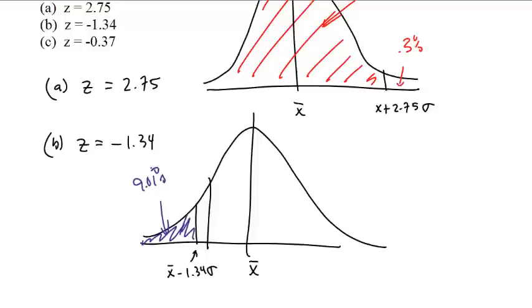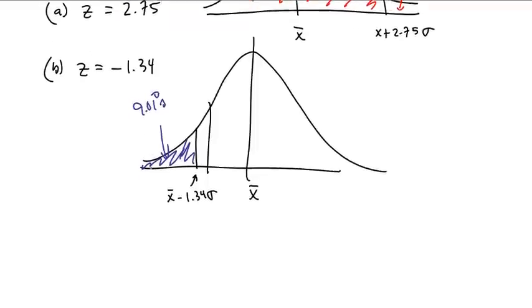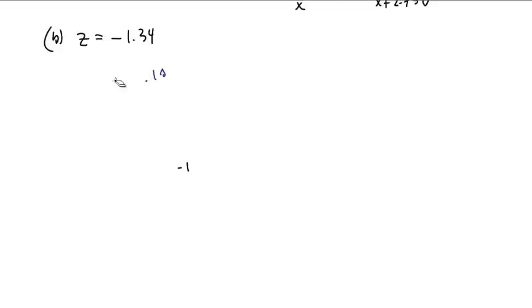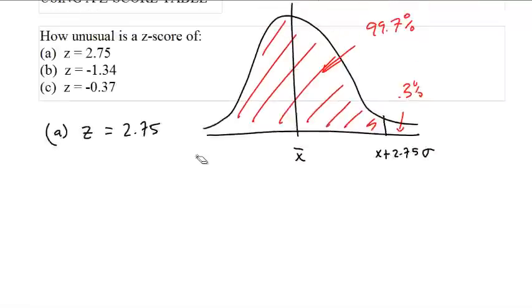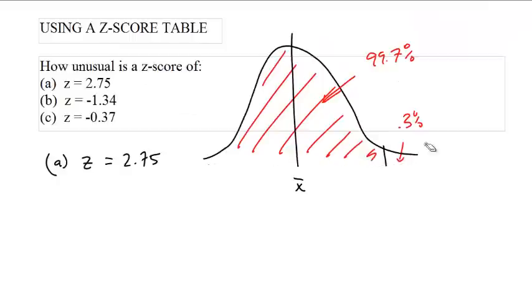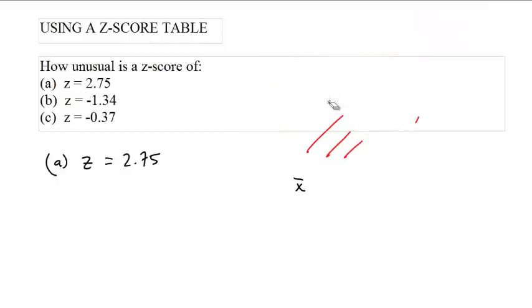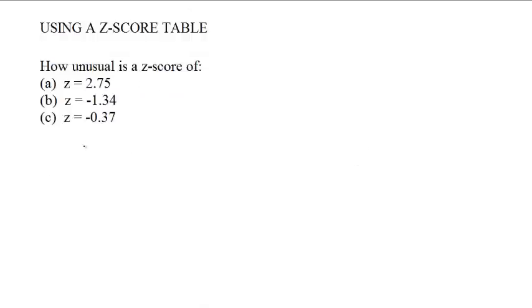What about a z-score of negative 0.37? Let me erase these. Negative 0.37. Well, we go to the chart. And on the next test, there's going to be a copy of this chart. Maybe a simplified version of this chart so it fits on the chart, because this is a two-page thing. This particular value I'm checking out because it's especially annoying.